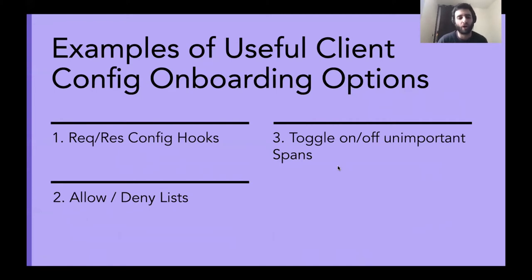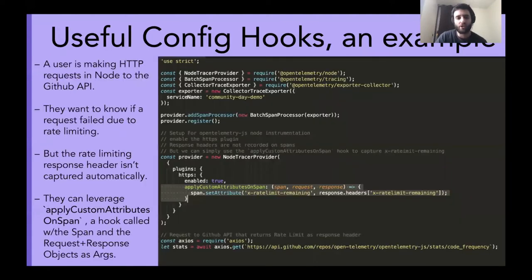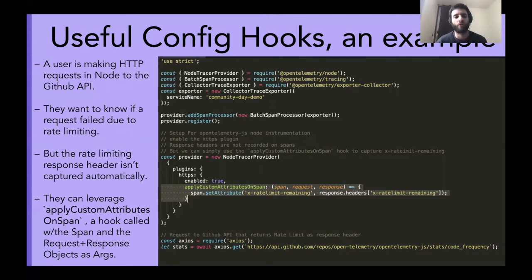I want to quickly highlight a few really useful configuration options: specifically, request/response configuration hooks, allow/denylists, and the ability to toggle on and off tracing of middleware on important spans. Let's start with the one I think is most useful — configuration hooks. I'm using OpenTelemetry.js, specifically their Node packages, as an example. A user is making requests to the GitHub API, which is very heavily rate limited, and they want to know if a request is 404ing or returning a 400 or 500 response code due to rate limit issues. But the automatic instrumentation of Node HTTP clients doesn't automatically capture every single response header.